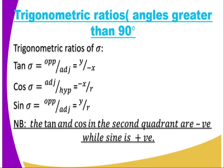We go to the second quadrant where we have mu. Tan alpha is opposite over adjacent, which is y over negative x. Cos mu is adjacent over hypotenuse, which is negative x over r. And sin mu is opposite over hypotenuse, which is y divided by r. Note that tan and cos in the second quadrant are negative — these are angles greater than 90 but less than 180 — while sin is positive.